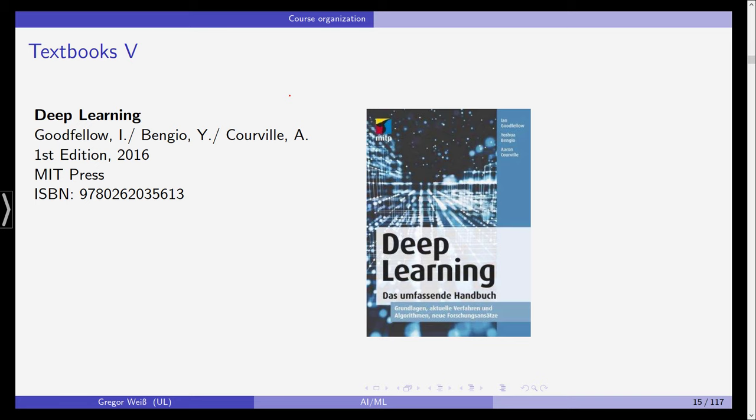And last but not least, Deep Learning by Goodfellow, Bengio and Corville. This is the general one. The original is, of course, in English. This was a huge success, I think, and is an extremely, extremely good textbook on deep learning as one part of artificial intelligence. It is not really focused on finance or business in the first place, but this is, I would say, the standard textbook on deep learning. And as soon as we dive into deep learning in chapter three, we need to rely and use this textbook as a reference. So that's why I mentioned this here.